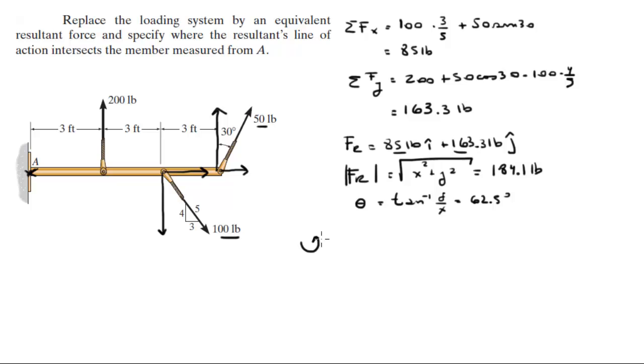The sum of the moments at A, assuming counterclockwise is positive, is given by 200 times 3 minus 100 times 4 over 5 times 6.